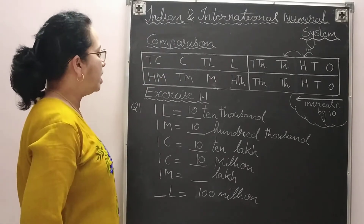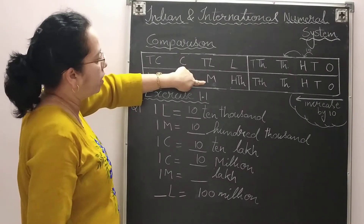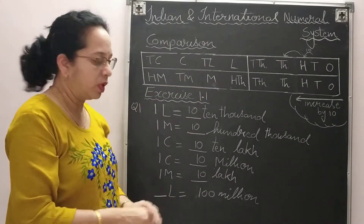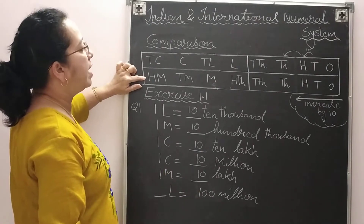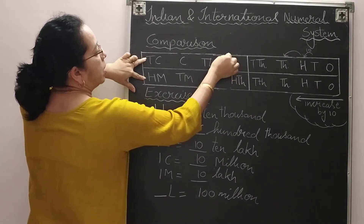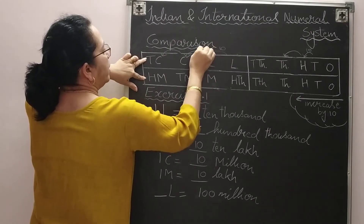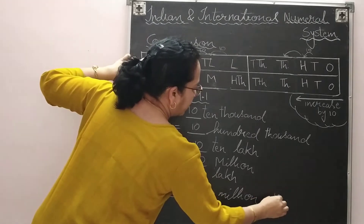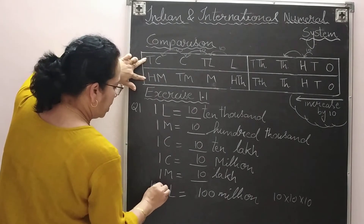Next: 100 million equals how many lakhs? Keep finger on 100 million. 100 million equals 10 crore. Now for lakhs, count how many jumps: jump 1, jump 2, jump 3. So we multiply 10 × 10 × 10, which means the answer is 1000 lakhs.